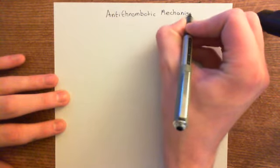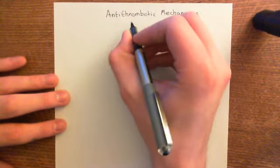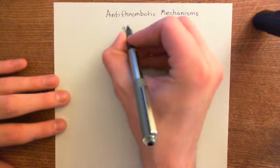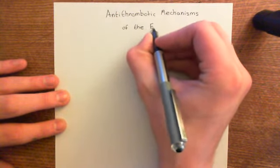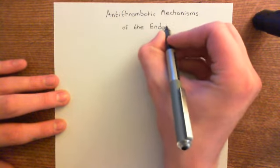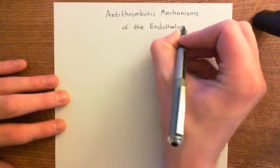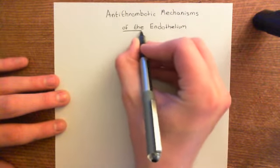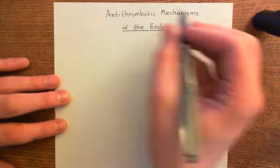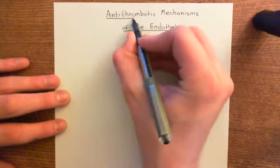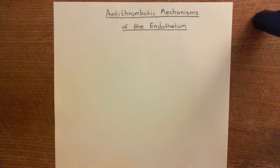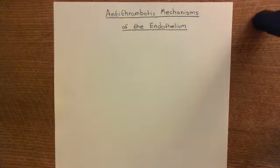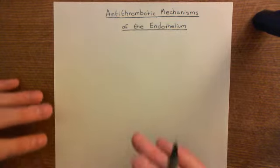The structure of this video: we're going to start off with a revision of the hemostatic pathway, and then we're going to talk about thrombosis — which is basically when you activate the hemostatic pathway when there isn't actually a hole in the side of your blood vessel. Then we'll talk about the mechanisms that the endothelium has for preventing thrombosis. It's necessary to understand hemostasis first, because that's the process that is happening in thrombosis.